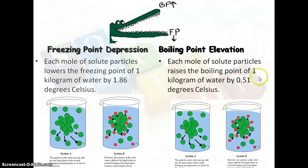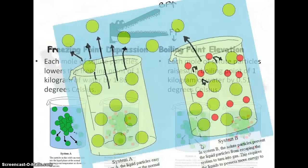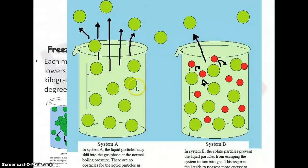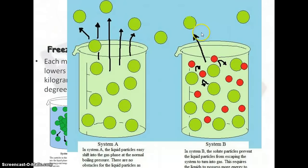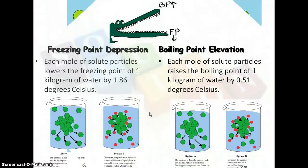Boiling point elevation: each mole of solute will raise the boiling point of one kilogram of water by 0.51 degrees Celsius. This is sort of the opposite — liquid particles in a pure solvent system can easily go into gas phase, but it's going to be harder to get solute molecules to go into gas phase because of the IMFs between the solute and the solvent. You're going to have to add more energy to break these interactions, so there is an elevation in the boiling point. It takes more energy to get these molecules to escape.